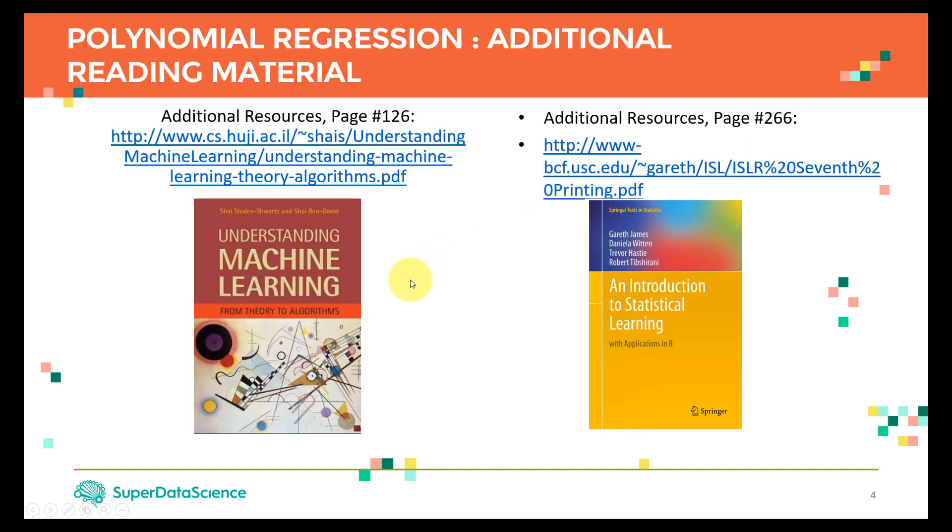Let's take a look at additional reading material. If you guys want to get more information, please go ahead and check these two books: Understanding Machine Learning and An Introduction to Statistical Learning in R. Both of them are free books. Here are the links to the books, and you can find a ton of information on polynomial regression in pages 126 and 266.